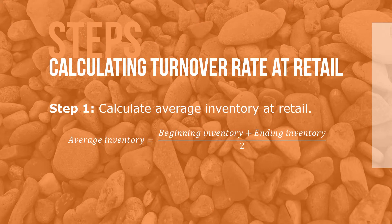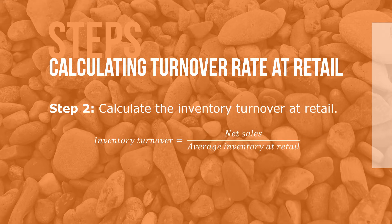Here are the steps to calculating inventory turnover rate at retail. Step 1: Calculate the average inventory at retail, where average inventory equals beginning inventory plus ending inventory divided by 2. Step 2: Calculate the inventory turnover at retail, where inventory turnover equals net sales over average inventory at retail.